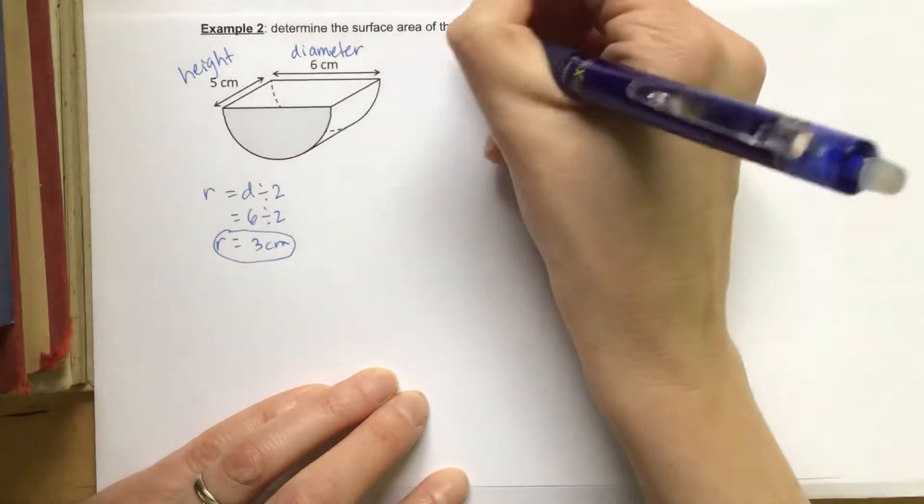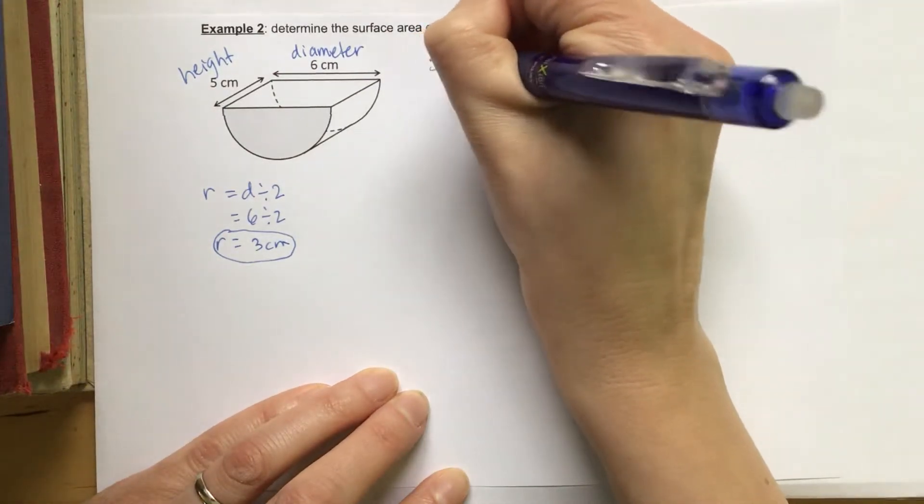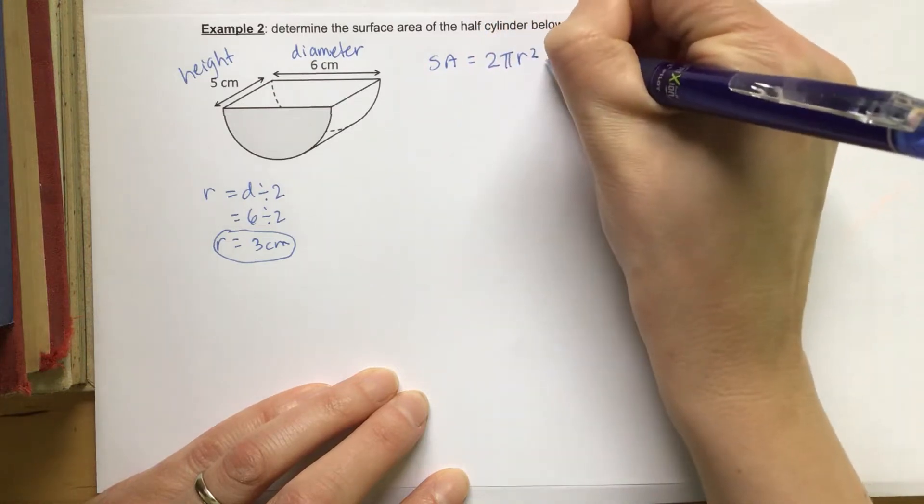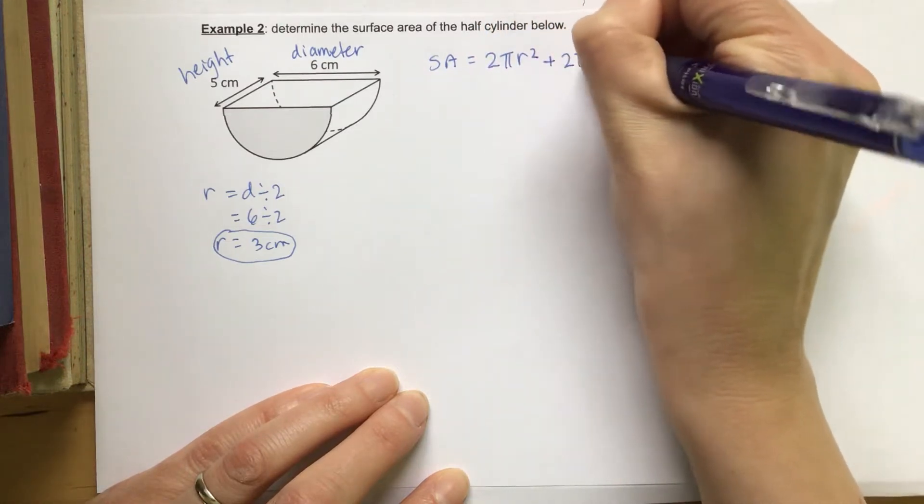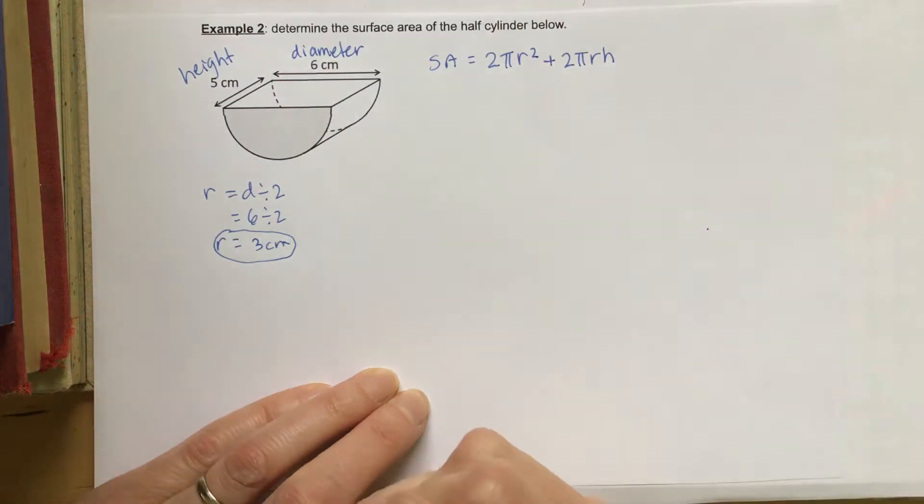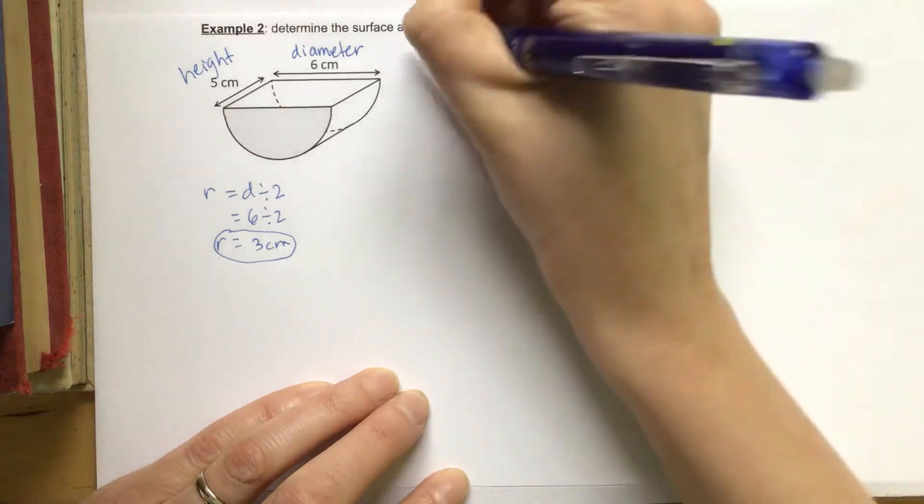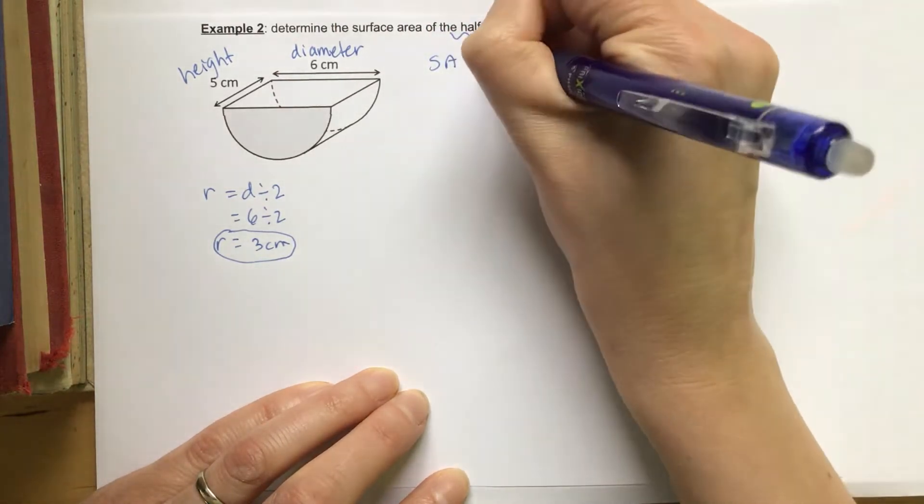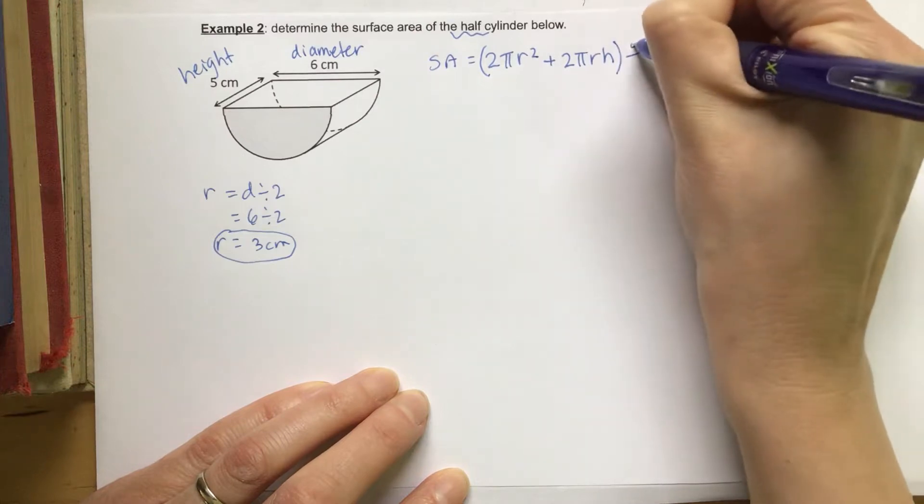So the formula for surface area of a cylinder is 2 times pi times r squared plus 2 times pi times r times h. Now, this is for a full cylinder, and we only need a half cylinder. So we are going to divide all of this by 2.